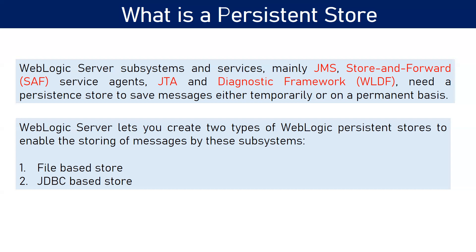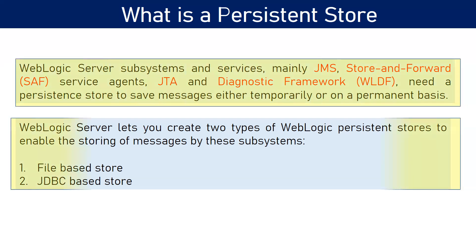You can save data at two levels: either at the file system level in your operating system, or in a JDBC-based store. When we talk about WebLogic server persistence stores, we have two options: you can define your persistent store as a file-based store or as a JDBC store. There are different pros and cons for each, and there is also a default configuration if you do not define one explicitly.